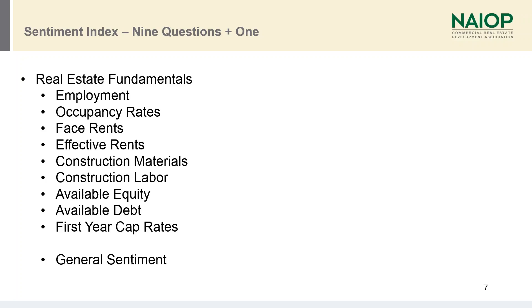The 10th question is a response by individuals to what they believe the general sentiment of the commercial real estate market will be one year from today. This is also used internally as a check figure, because as we go through the construction of the composite index, this particular question is a way for us to validate that the individual responses on the above nine fundamentals are being consistently answered with the general sentiment. In summary, this general sentiment question is added to give us a test of reasonableness and consistency in the creation of our index number.